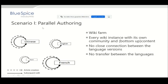Each wiki has its own community and its own content. As you can see in the model, the versions are quite separate. There is no close connection between these versions apart from maybe the interwiki link, and there is also no transfer between the languages.